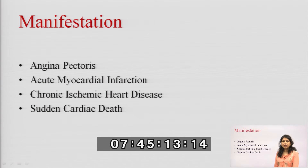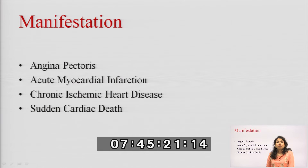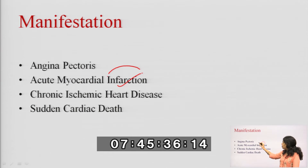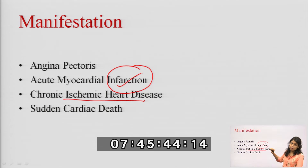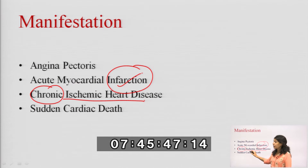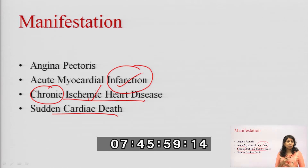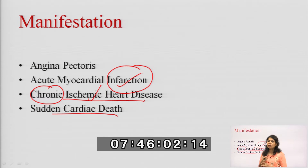Ischemic heart disease may lead to: angina pectoris (which we are discussing), acute myocardial infarction — where the muscle portion of the heart has infarction (dead tissue) because oxygen is not supplied, chronic ischemic heart disease — ischemia over a very long duration — and ultimately sudden cardiac death. A patient suffering from ischemic heart disease may progress through all these stages.